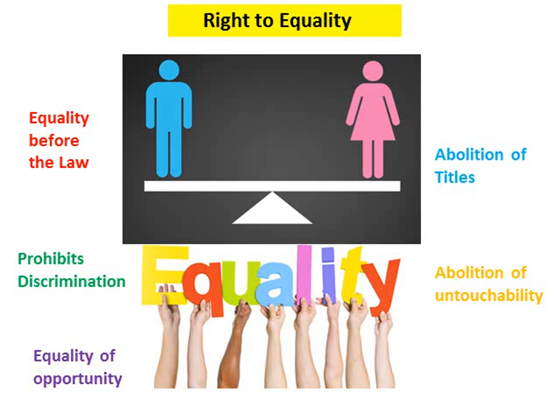Under the fundamental right of Right to Equality, we have equality before the law and equality in protection by the law, irrespective of caste, creed, gender, religion, or race. Equality before the law means I could be a clerk, an important official, or a person from a very poor economic strata of society, but I will be treated equally in the eyes of the law. Equal protection by law means that just because I am a poor person doesn't mean that justice is denied.